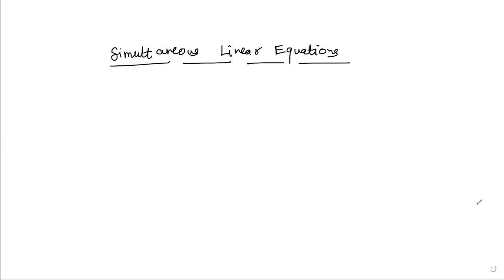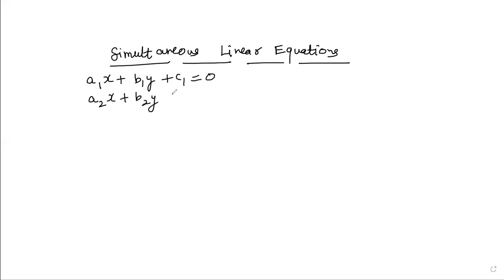Let's begin. Simultaneous linear equations — it's very clear from the name that we are talking about a pair of linear equations. The general form of the two equations looks like: a1x + b1y + c1 = 0, where a1 is the coefficient of x, b1 is the coefficient of y, and c1 is the constant term. Similarly, the second equation is a2x + b2y + c2 = 0.